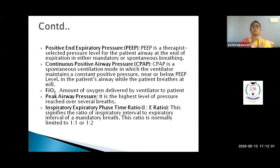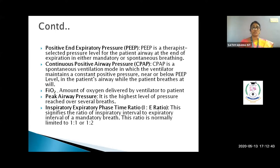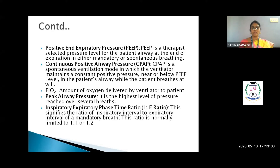Peak airway pressure is the highest pressure reached over a set time period. The I:E ratio is the ratio of inspiratory time to expiratory time — typically 1:1, 1:1.1, or 1:2. All these parameters must be set on the ventilator based on each patient's condition and body weight.